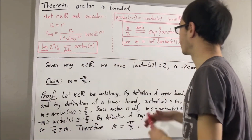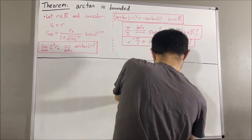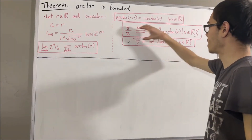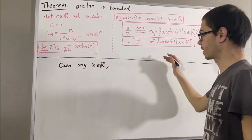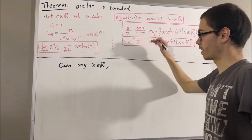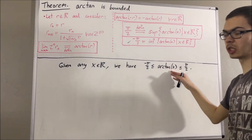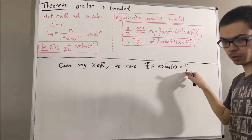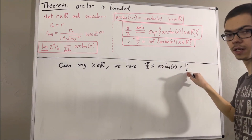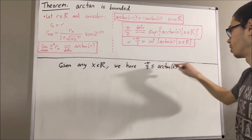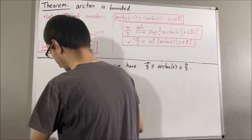So now we're going to replace m with negative pi over 2. Notice that by the definition of upper bound and lower bound, if we consider any real number x, we're going to have that arctangent of x is less than or equal to pi over 2 and arctangent of x is greater than or equal to negative pi over 2. So arctangent of x lies in the closed interval negative pi over 2 to pi over 2. But the claim is that arctangent of x also lies in the open interval negative pi over 2 to pi over 2 — in other words, arctangent of x can never equal negative pi over 2 or pi over 2. The way we can show that is using the fact that arctangent is a strictly increasing function, which we proved.